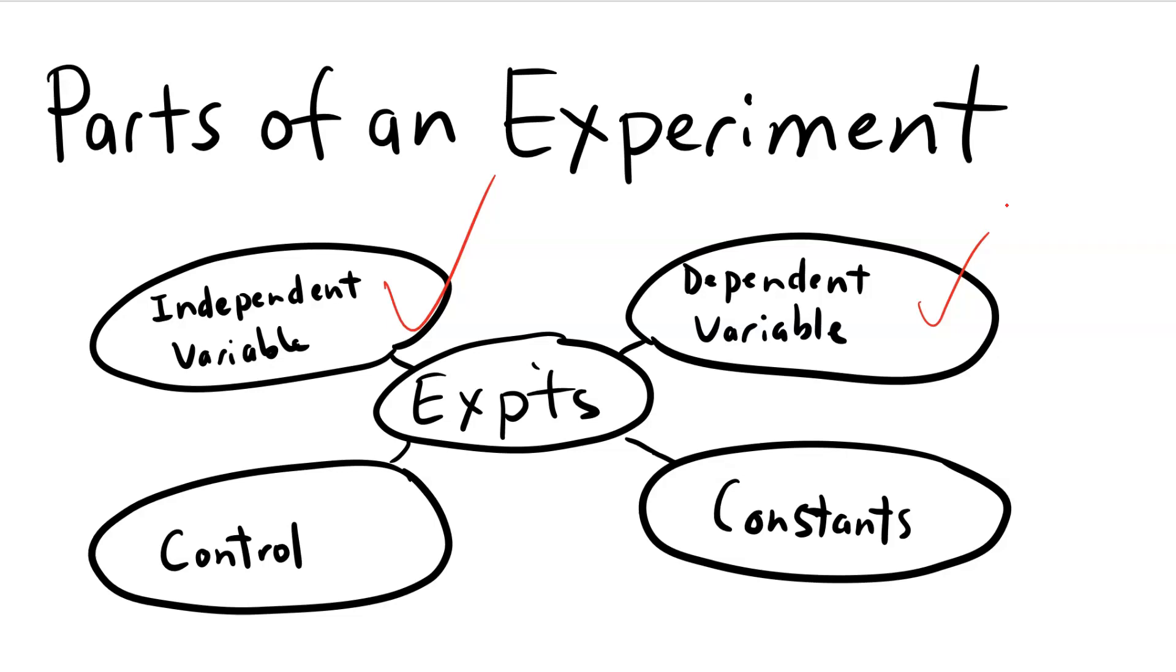There must also be a control. The control is a part of the experiment that does not receive the independent variable. This allows us to see what happens when we do not change an aspect of the experimental environment. You've probably heard of controlled experiments, and this is why they are called that—they include a control for comparison of the experimental part of the experiment. It takes some time thinking and creating great controls for our experiments. We will practice this throughout the year and in a moment in this video.